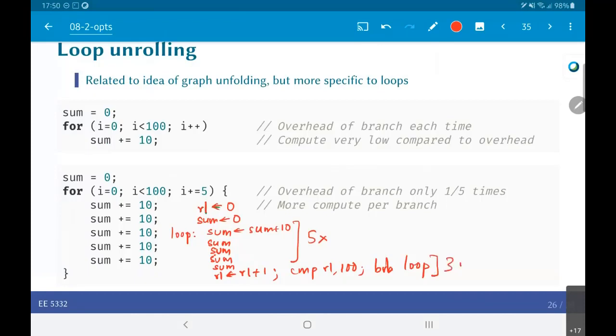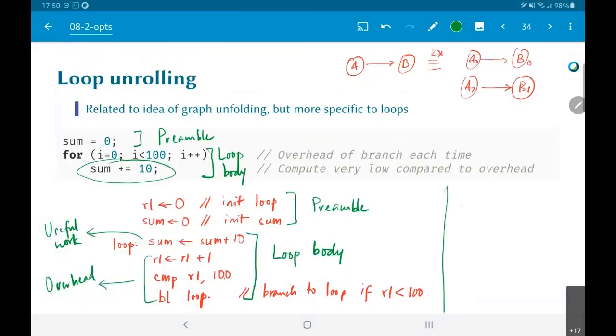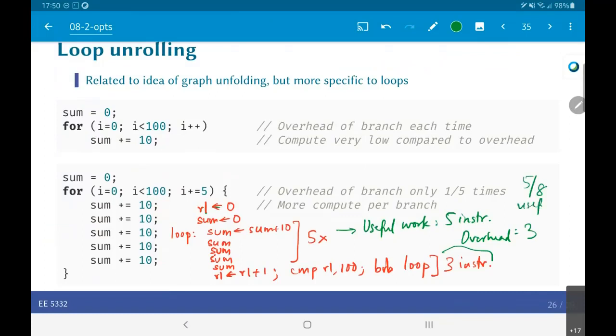So this is basically three instructions. So you see what has happened because of the fact that I unrolled in this way, the useful work is now 5 instructions and overhead is 3. So from what I had over here, which was 1 by 4 useful work, what I have over here is 5 by 8 useful work. So clearly this is a very simple example to indicate why loop unrolling could be useful.